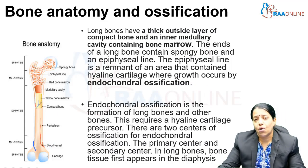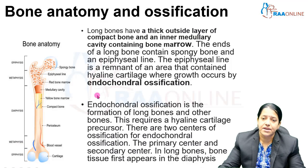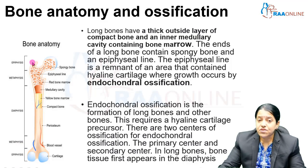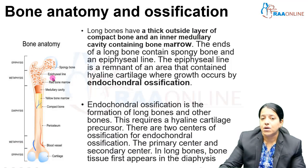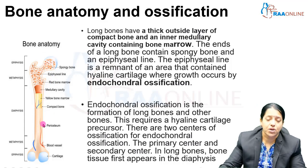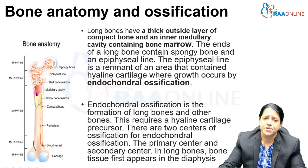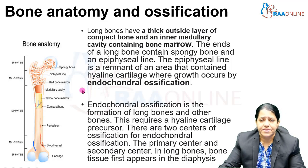Long bones have an outer layer of compact bone, and inside we have the medullary cavity which contains bone marrow. The ends of the long bone are also called spongy bone because their structure is different from compact bone. These spongy bones are separated from the compact bone by the epiphyseal line.